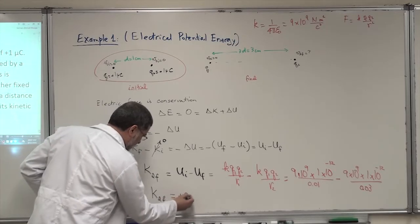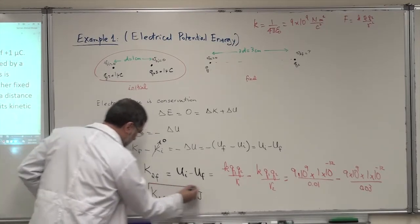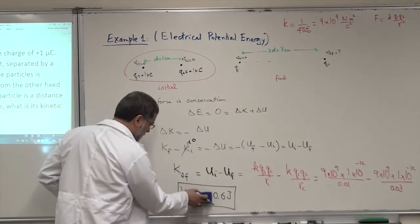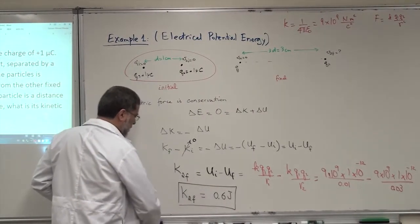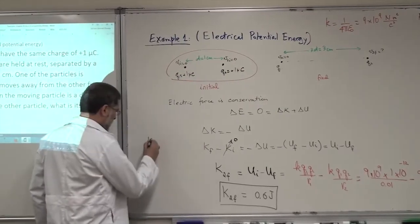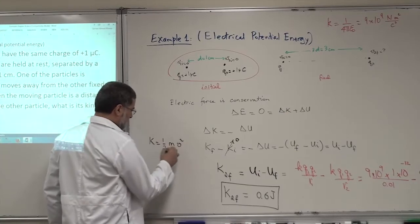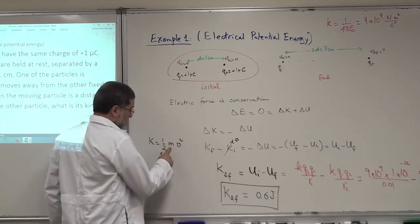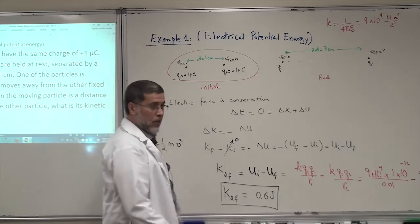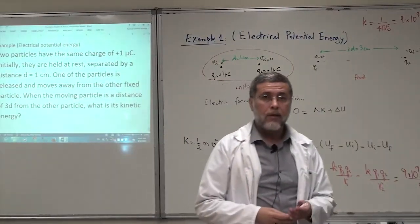The result is positive 0.6 joules. Of course, kinetic energy is always positive — we don't even need the plus sign — because kinetic energy is one half m v squared, mass is always positive, v squared is always positive, and therefore kinetic energy is always a positive number.